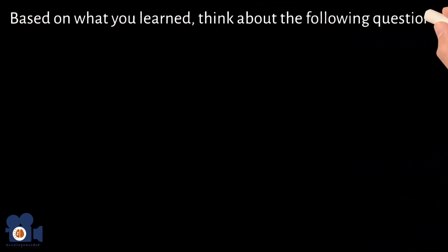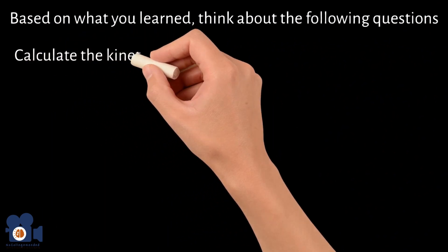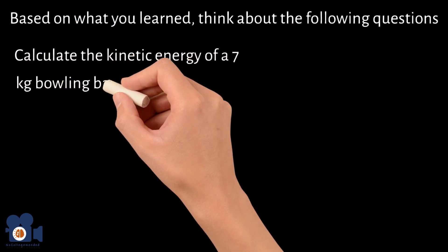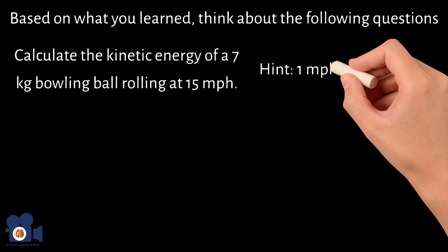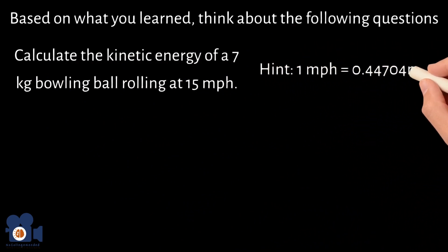Based on what you learned, think about the following questions. Calculate the kinetic energy of a 7-kilogram bowling ball rolling at 15 miles per hour. Hint: 1 mile per hour equals 0.44704 meters per second.